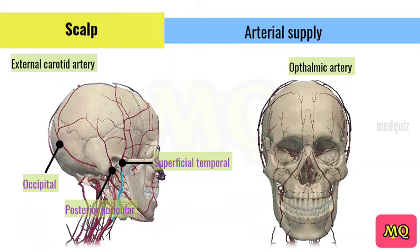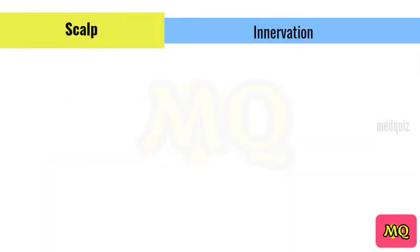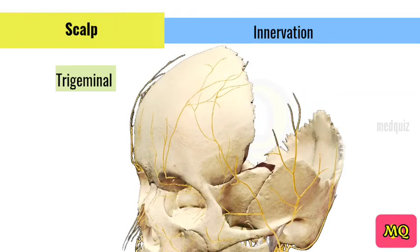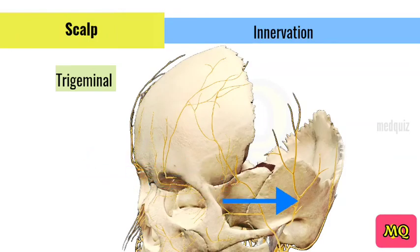Anteriorly and superiorly, the scalp receives additional supply from two branches of the ophthalmic artery: the supraorbital and supratrochlear arteries. These vessels accompany the supraorbital and supratrochlear nerves respectively. The scalp receives cutaneous innervation from branches of the trigeminal nerve or the cervical nerve roots. The trigeminal branches include the supratrochlear nerve, supraorbital nerve, zygomaticotemporal nerve, and auriculotemporal nerve.